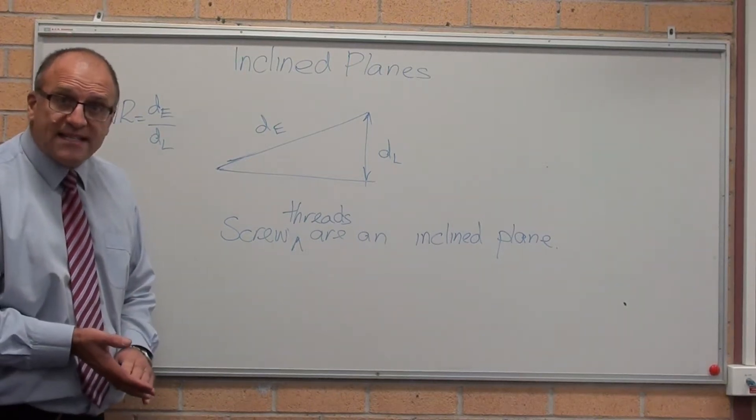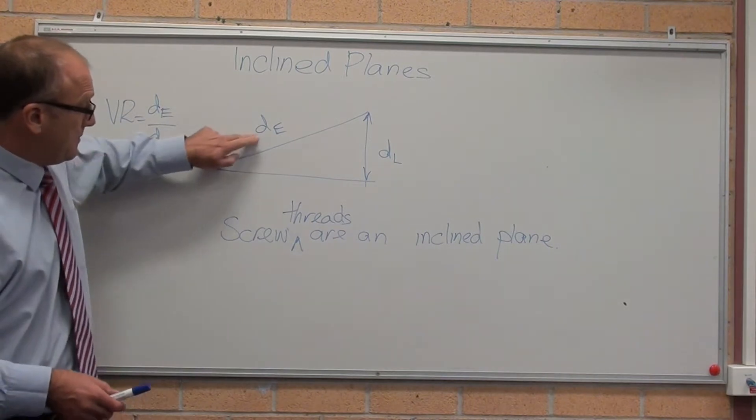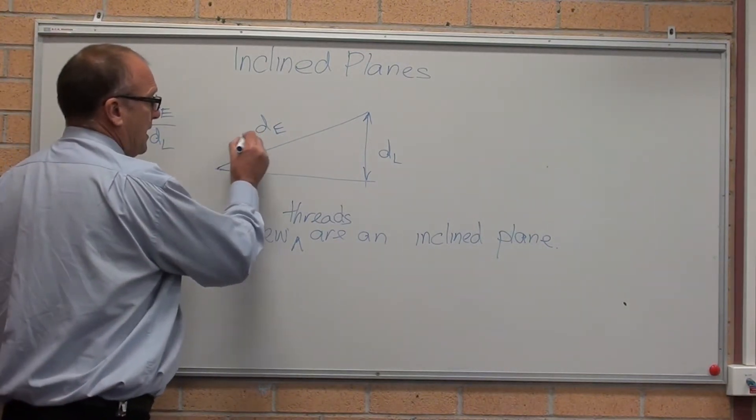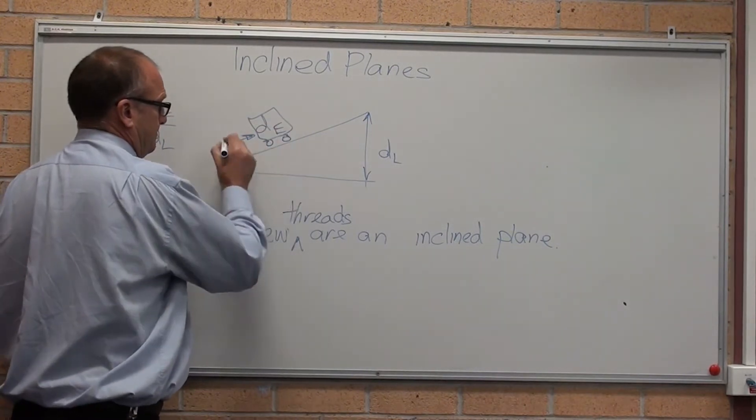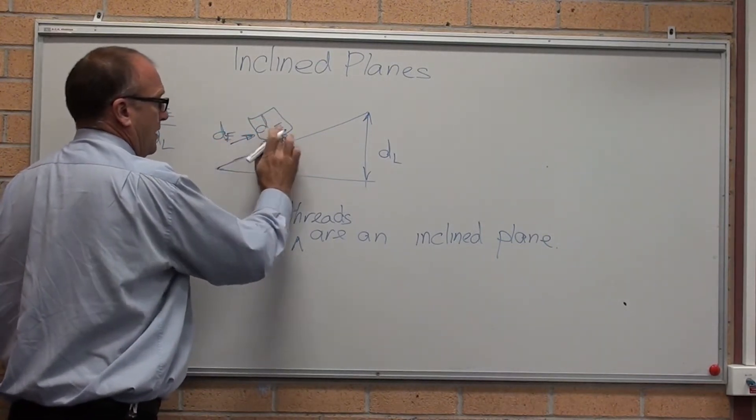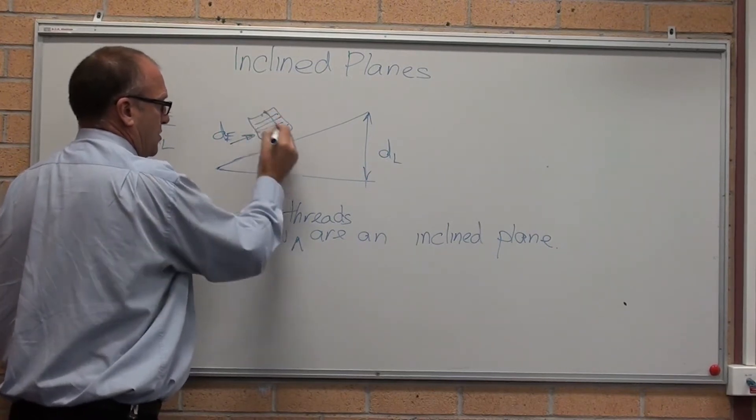The second sort of machine is an inclined plane. If I'm pushing a trolley up a slope, there you go, there's a box on it.